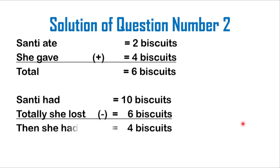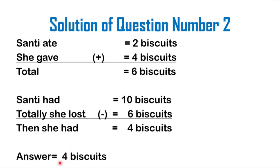In the final line, you should write that then she had 4 biscuits. Students, can you guess how to find this 4? In the right-hand column, you can see a 0 and a 6. Since 0 minus 6 is not possible, you write 1 as a carry bit on your left-hand side. So 10 minus 6 is equal to 4, and 1 minus 1 is equal to 0. Finally, we can say that she had 4 biscuits. As I mentioned, whenever you solve any types of questions, you should write the answer at the last. So the answer of this question is 4 biscuits.